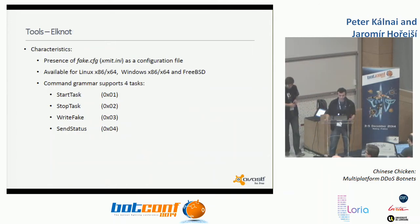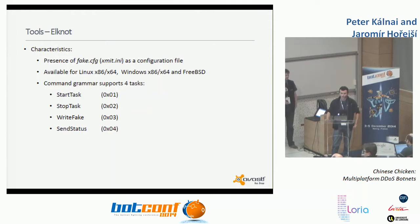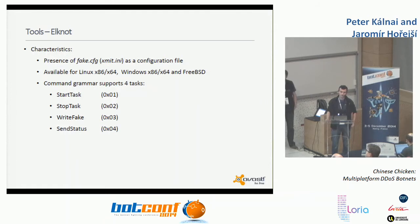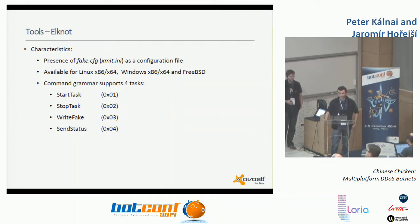Elknot is characterized by configuration files with specific filenames like fake.cfg or exme.ini. It was ported to many operating systems and architectures including Linux 32-bit, 64-bit, Windows 32-bit, 64-bit, and FreeBSD. These tools share a simple one-byte grammar CNC protocol supporting four commands: start flooding task, stop it, write a fake configuration, and send current status back to the CNC server.